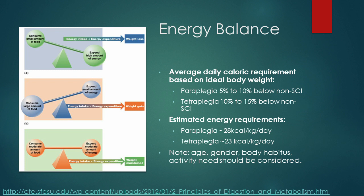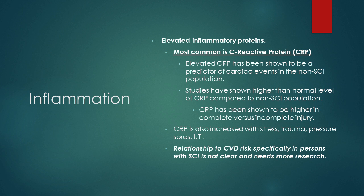Regarding elevated inflammatory proteins — C-reactive protein is elevated in people with SCIs. In the general population, high CRP is associated with cardiovascular disease. However, that specific relationship in spinal cord injury still needs a lot more research, so it's not as straightforward as ordering a lipid panel where cholesterol levels directly indicate cardiovascular risk.